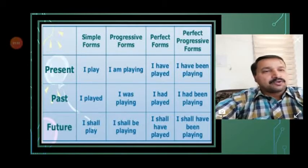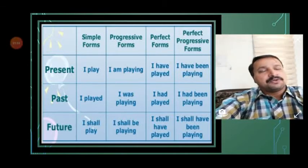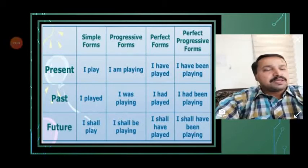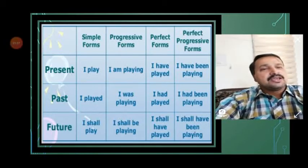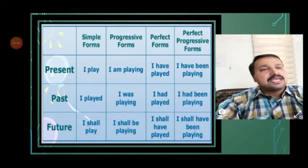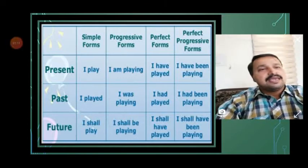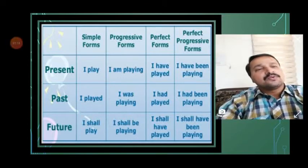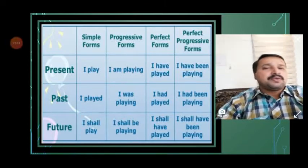In present perfect progressive or present perfect continuous tense: I have been playing, you have been playing, we have been playing, she has been playing, he has been playing, Raju has been playing.